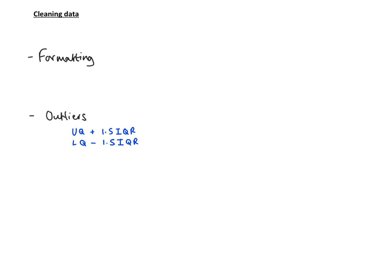If the question talks about the mean and standard deviation, we think about the mean plus and minus three standard deviations. Anything that falls outside of mean plus three standard deviations or mean minus three standard deviations will be considered an outlier. So cleaning data involves two main things: formatting (to do with spreadsheets) and outliers (found using either interquartile range or standard deviation).